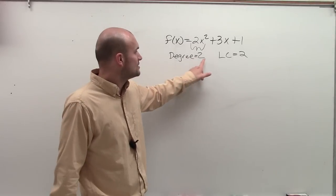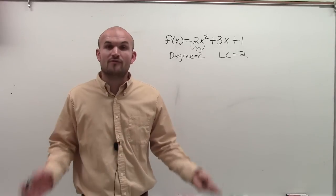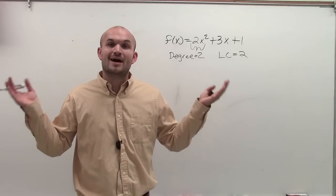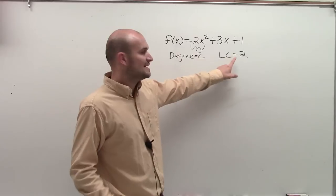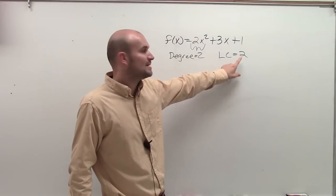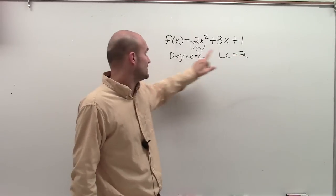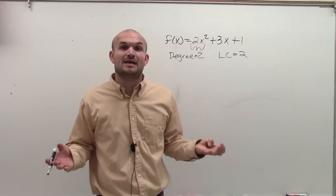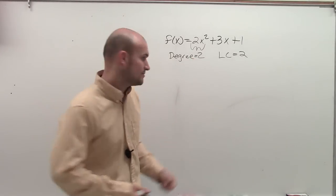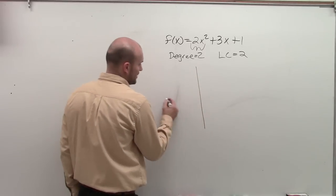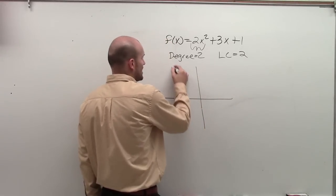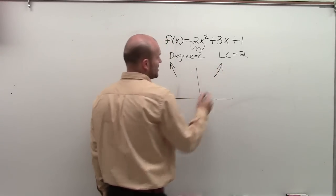So here I'm looking at a degree that's even, right? So if it's even, I told you either falls left, falls right, or rises left, rises right. Since my leading coefficient is positive and my degree is even, my graph is going to have end behavior of rising left and rising right. And I'm also going to show you another way to write it. So that means it rises left and rises right.